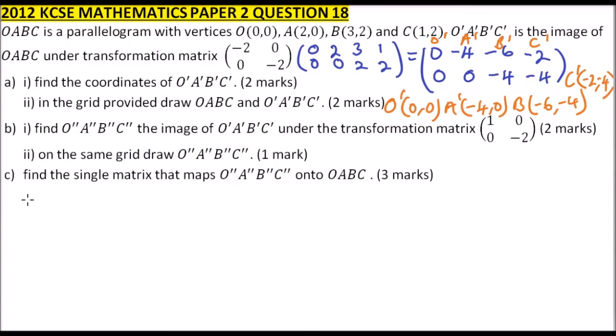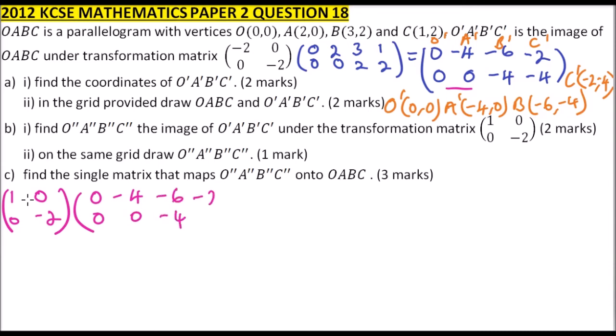Part B, roman number 1: find O''A''B''C'', the image of OABC under the transformation matrix (1, 0, 0, minus 2), for two marks. What you do is multiply the matrix we got for O'A'B'C' with this matrix. So we have matrix (1, 0, 0, minus 2) multiplied by (0,0; minus 4, 0; minus 6, minus 4; minus 2, minus 4).